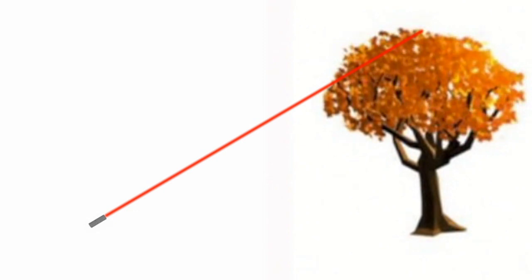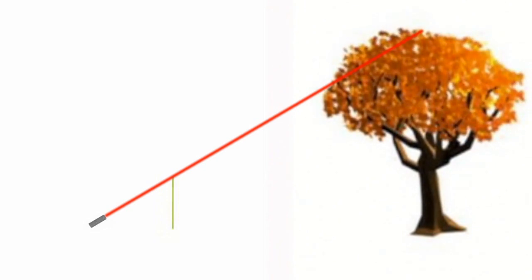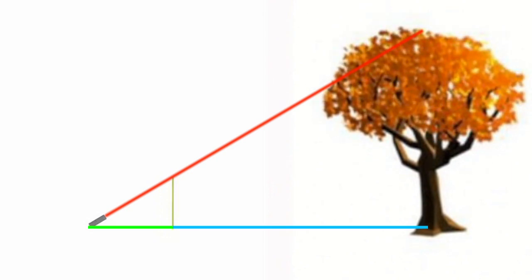We could take a meter stick and place it a distance from the laser where it just begins to touch the laser. Then we can measure the distance from the meter stick to the tree, and from the meter stick to the laser. Let's say these measurements are 7.5 meters and 1.5 meters.